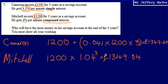So our answer to this question, who will have the most money in his savings account at the end of the three years, is going to be Mitchell, because he's got £1,349.84, and Cameron only had £1,347.60. So final answer, Mitchell will have more money at the end of the three years.